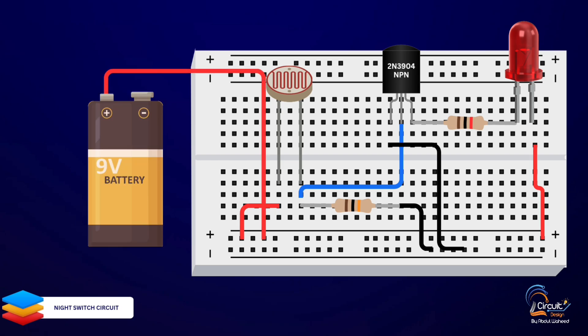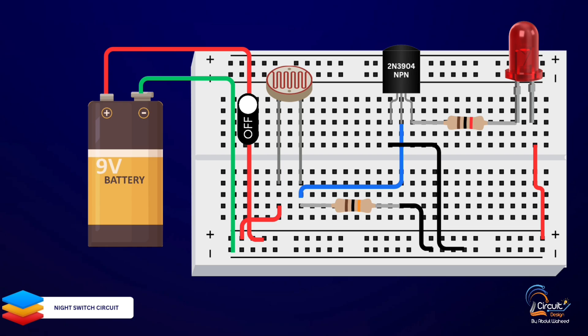Finally, connect the positive rail of the breadboard to the positive terminal of the power source and the negative rail to the negative terminal of the power source.